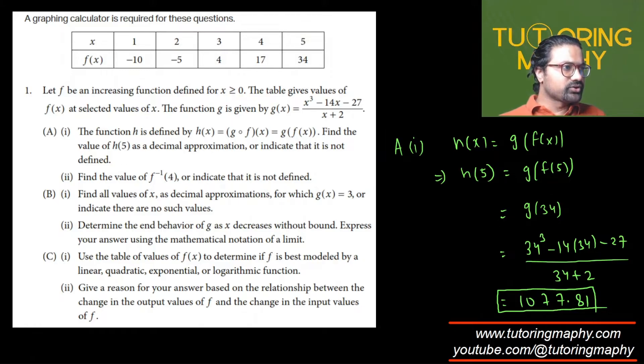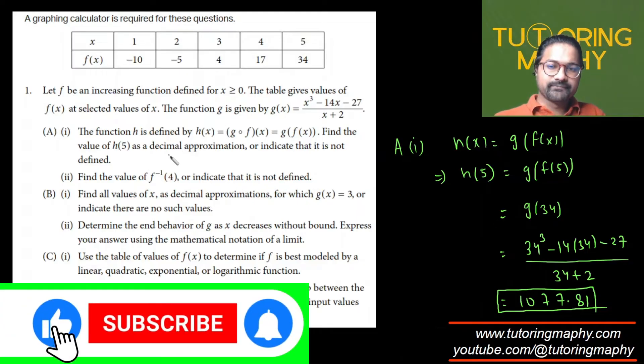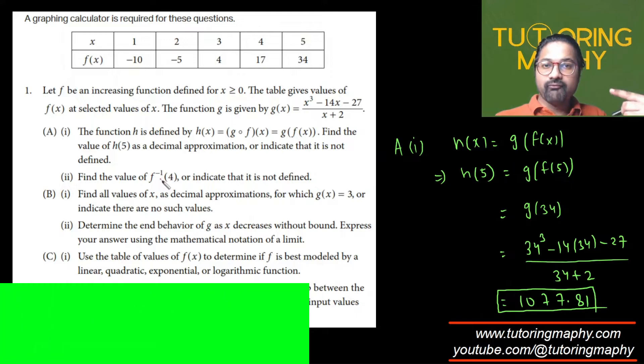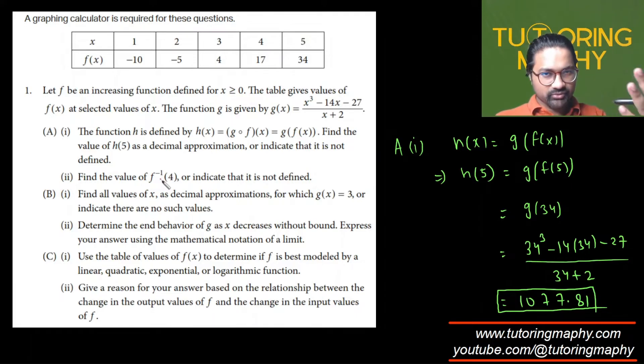They're asking what is the value of F inverse of 4, or indicate that it is not defined. F inverse of 4 is the x-coordinate when the y-value is 4, because inverse is reverse engineering—you're moving from y to x. This value is the y-coordinate. I can locate 4 in this table, and the corresponding value of x is 3. So the value of F inverse of 4 is 3.